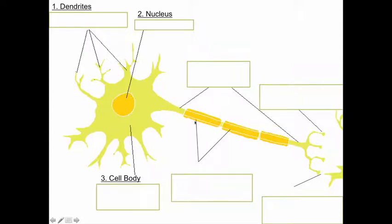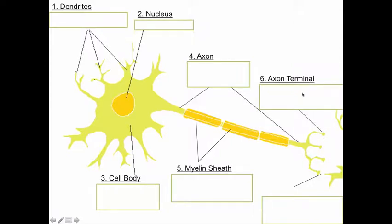Here's the nucleus of this neuron. The main part of the neuron that houses the nucleus is called the cell body. So we have dendrites — the short branches — the nucleus, and the cell body. The long branch coming off in this direction is called an axon. Surrounding the axon, you have the myelin sheath. At the very end of the axon, all these little ends are called the axon terminals.